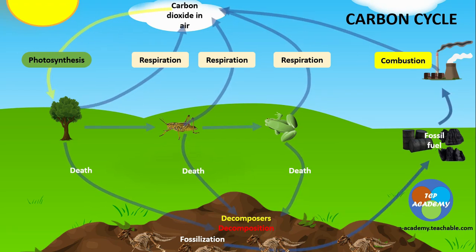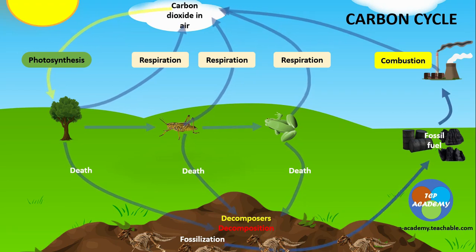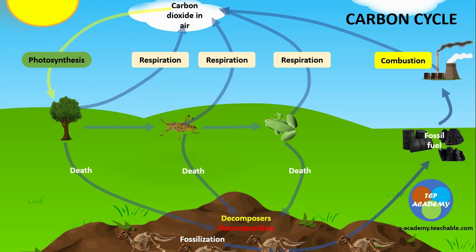Organisms not broken down by decomposition go through fossilization, which takes place under very high temperature and pressure. This process facilitates the formation of fossil fuels in the form of oils and charcoal. These fossil fuels are burnt in factories, motor vehicles, etc., releasing carbon dioxide to the atmosphere through combustion. The cycle goes almost in a circle, showing a cyclic movement of carbon through the ecosystem as it passes through organisms and the lithosphere.